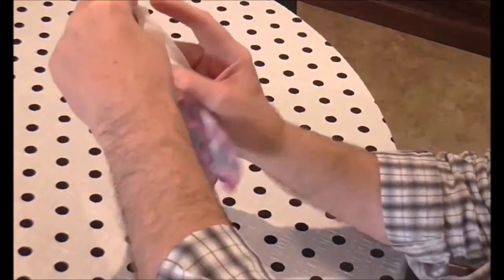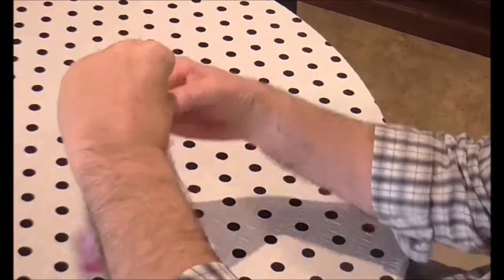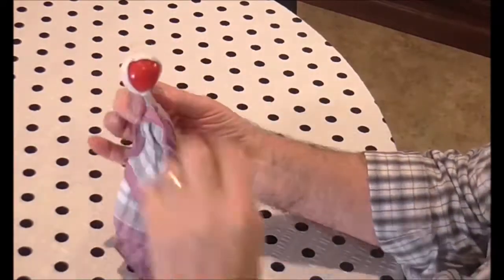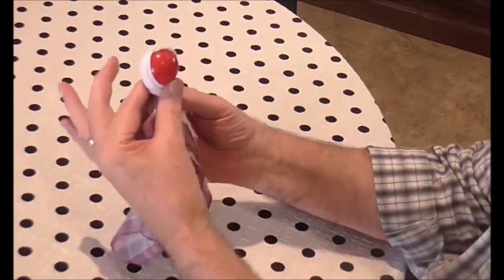Swap your hands over and twist the handkerchief a couple of times so that the ball stays right where it is. From the front, they can't see the ball at all.